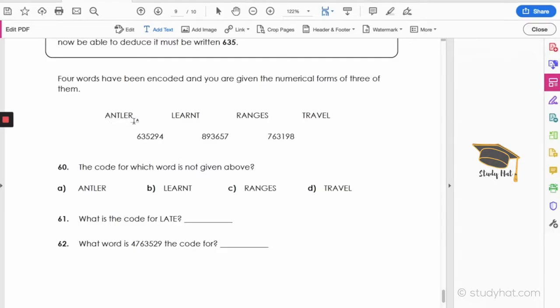So we've got ANTLER, starts with an A and an R. LEARNT, starts with an L, ends with a T. RANGES, starts with an R, so that could give us a clue. Or TRAVEL, starts with a T and ends with an L.